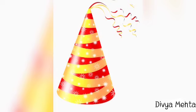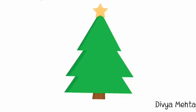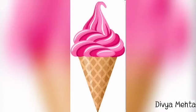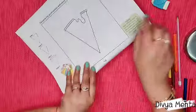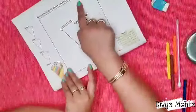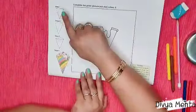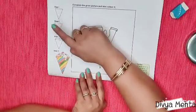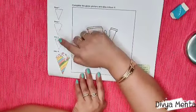As you can see birthday cap, Christmas tree, mountains and ice cream cone. These objects have a conical shape. So look at this page and on the left side you can see the steps how can we draw a conical shape.